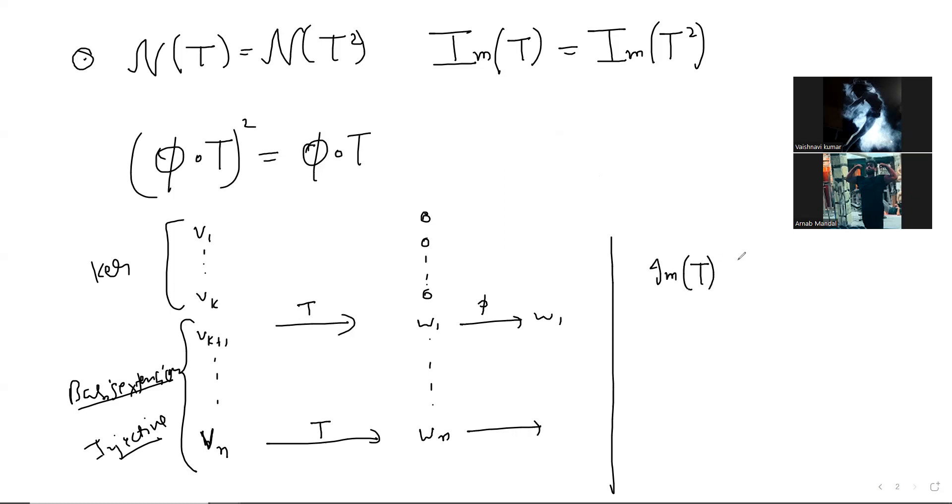Is this correct? This just comes from the rank nullity theorem, from the rank nullity theorem and the given hypothesis. The rank nullity theorem tells you that this plus this is equal to V. But we just saw that the null space cannot intersect with the image, it was injective on the image. That it really breaks up nicely like this.